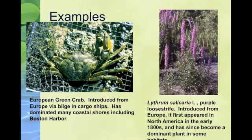In that water were baby crabs. And those crabs, because they had no competition in the area, started to dominate and overgrow. Now if you go fishing and crabbing in Boston Harbor, you will pull up basically all European green crabs, instead of the Jonah or king crabs that actually originated in the area.